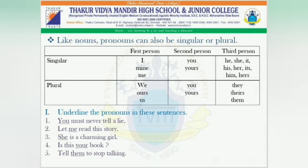Now let's practice what we have learnt. Underline the pronouns in these sentences. First: 'You must never tell a lie.' The pronoun is 'you'. Second: 'Let me read the story.' The pronoun is 'me'. Third: 'She is a charming girl.' 'She' is the pronoun. Fourth: 'Is this your book?' 'Your' is the pronoun. Fifth: 'Tell them to stop talking.' 'Them' is the pronoun.